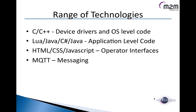On the application framework, there are many different technologies available. We can use C and C++ for developing device drivers at the OS level. We can use Lua, Java, or C# for developing application-level code. We can use HTML, CSS, and JavaScript for designing local operator interfaces. And of course MQTT is a protocol used for sending messages to remote servers. I'd now like to pass the stage to James for the rest of the slides.